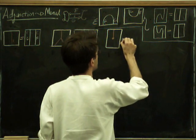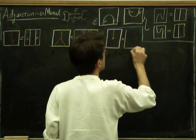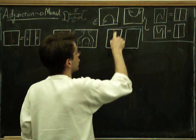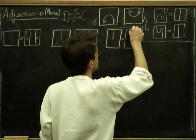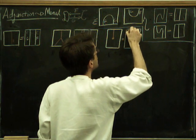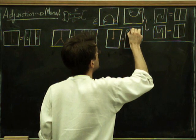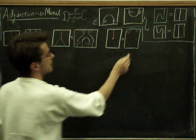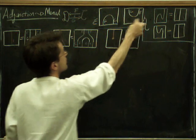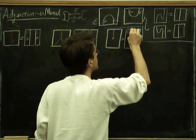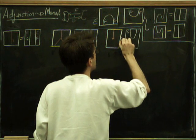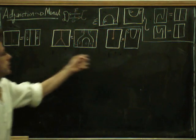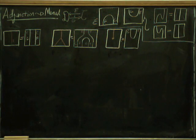Similarly, we're pretty much forced as to what we should take for the unit. So we're going from the identity on C up to T, but T was just do G and then do F, and how can we go from there to there? Well, that component is eta. That's essentially the answer. So we define our product and our unit in that way.